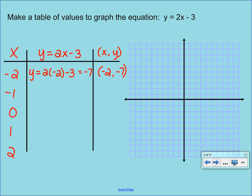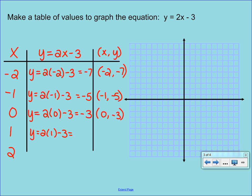Then you just repeat this process. Plug in negative 1: y = 2 times negative 1 minus 3, which is negative 2 minus 3, which is negative 5. So our ordered pair is negative 1, negative 5. If we plug 0 in, 2 times 0 minus 3 gives us negative 3, so we have the point 0, negative 3. Plug in 1: 2 times 1 minus 3 gives us negative 1. And lastly, 2 times 2 minus 3 gives us 1. So you have the point 2, 1.